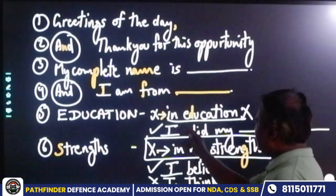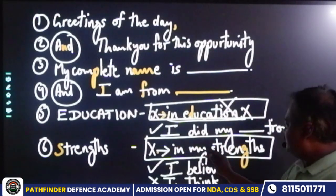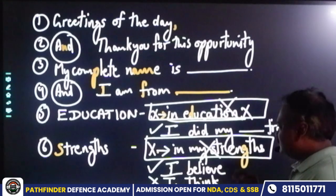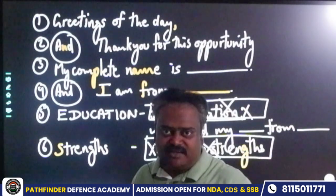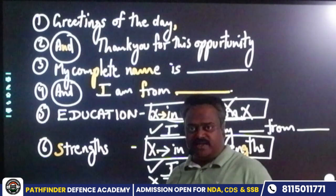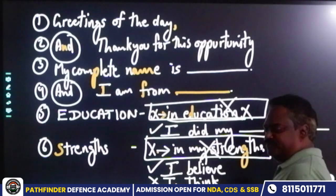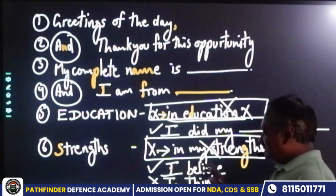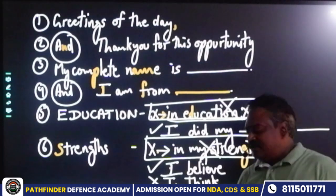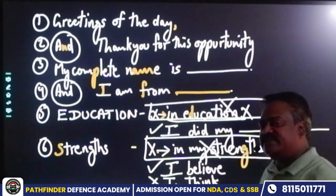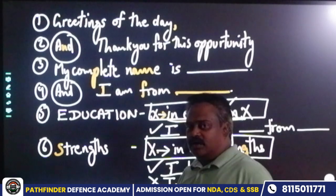So we have removed the extra headings. We are not going to say 'In my strengths' — no. He already knows what he has asked, so you don't need to repeat it. When he asks 'What are your strengths?', you simply start with your response. You say 'I believe.' There is a difference between 'believe' and 'think' — believe carries more conviction. So: I believe my strengths are...